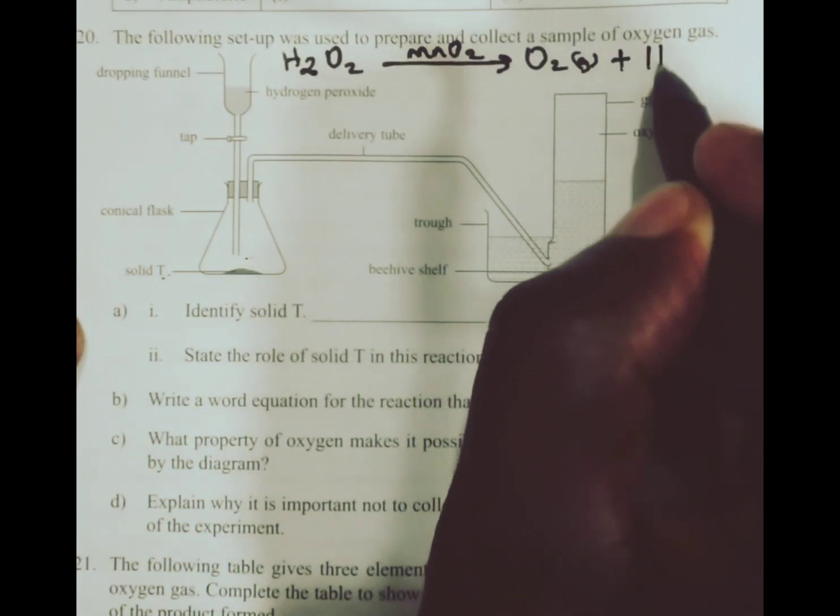Hydrogen peroxide, which has a chemical formula of H2O2, decomposes in the presence of manganese(IV) oxide catalyst to liberate oxygen gas and water.